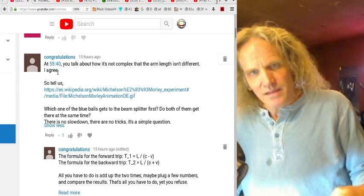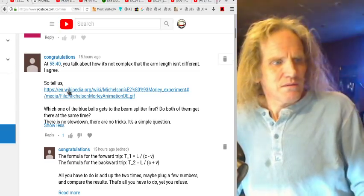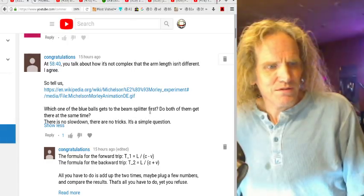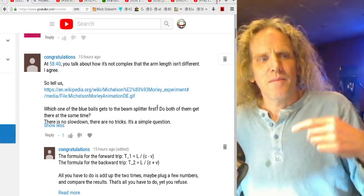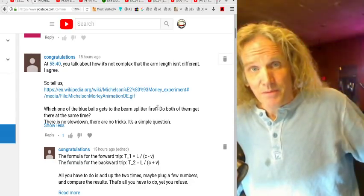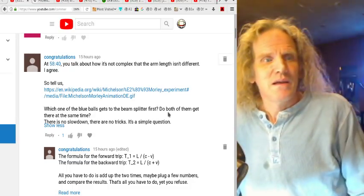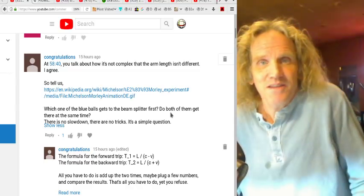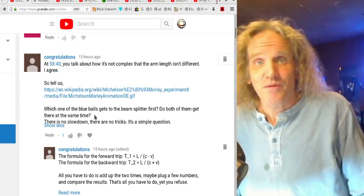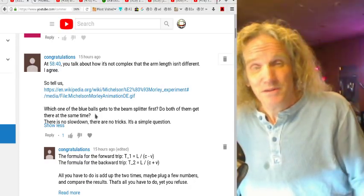I argue that photons never travel any other speed than the speed of light. And if the length is the same, then the travel time is the same. So tell us, so he links to this Wikipedia page, which one of the blue balls gets to the beam splitter first? So because they make an animation based on their formula, and I'll just point out how it's not the reality, it doesn't mean anything. Do both of them get there at the same time? Well, of course they both do. And I'll explain to you where you're going wrong, but I mean, I'm just not going to keep doing this.